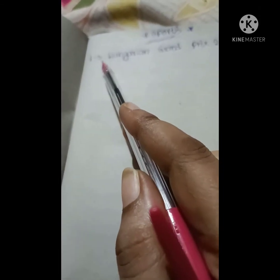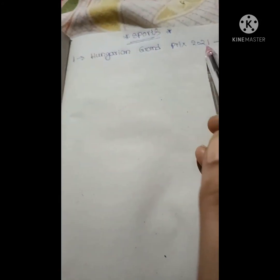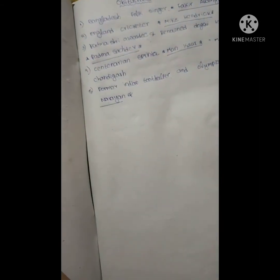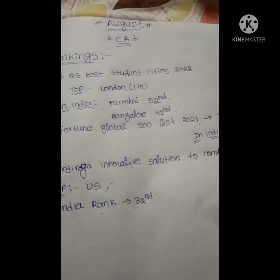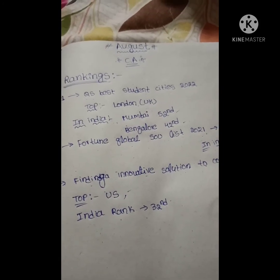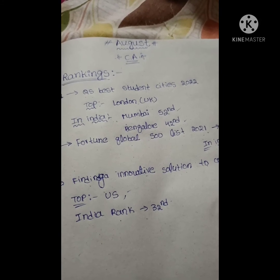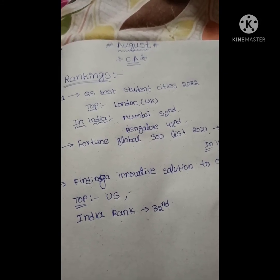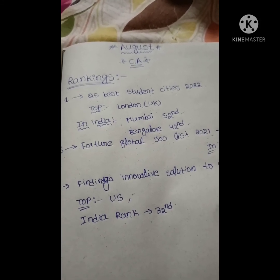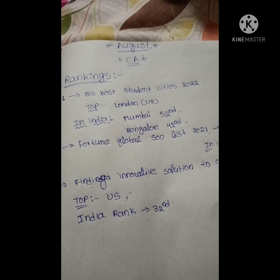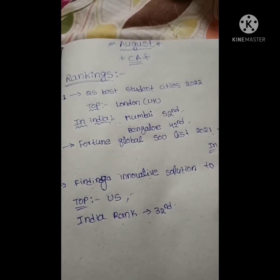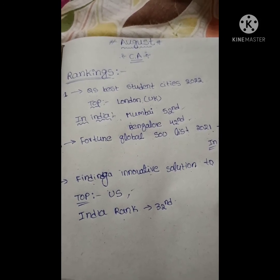In sports, there is only one event in the first week of August — the Hungarian Grand Prix 2021, won by Esteban Ocon from France. This is the first week current affairs. I hope it's very helpful to each and every candidate preparing for mains. Thank you for watching. If you like this video, please like, share, and subscribe. Tomorrow or day after tomorrow I will upload the second week of August month rankings, books, and others. Please share my channel link to your friends who are preparing for banking examinations. Thank you!